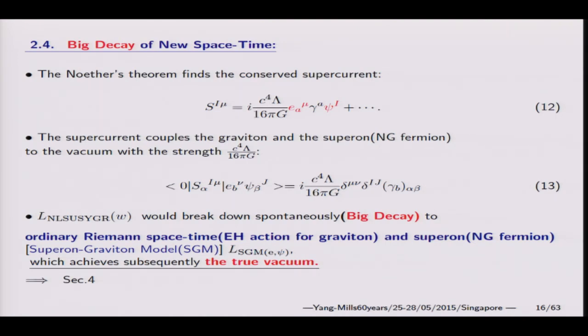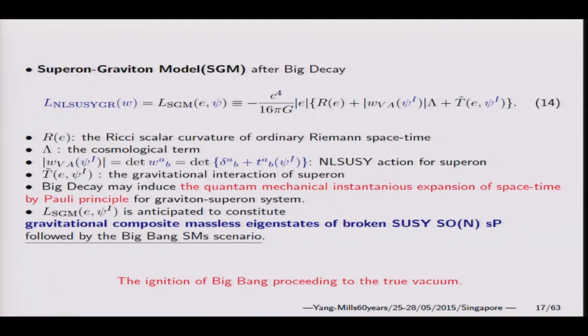We call this vacuum decay. Therefore, specific Riemann's space-time automatically induces vacuum decay to Riemann-Einstein gravity and also non-Goldstone fermion. This is the exact form in detail. I start from the non-linear general relativity action. This action decays to the sparron-graviton action with Einstein-Riemann scalar Riemann sphere, and also matter interaction. This is the sparron-graviton model after vacuum decay.